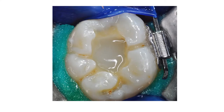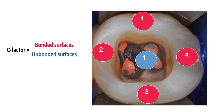Here we can see that about 85% of the pulp chamber was filled with SDR flowable bulk-fill resin material, leaving approximately 2 mm of space to cap it with a conventional composite resin material for a more aesthetic result. When filling an endodontic access cavity with composite resin, we are dealing with a very high C-factor configuration where shrinkage stress will be very high. The C-factor is determined by dividing the number of bonded surfaces by the number of unbonded surfaces, and in most endodontic access cavities we will have a C-factor of 4.